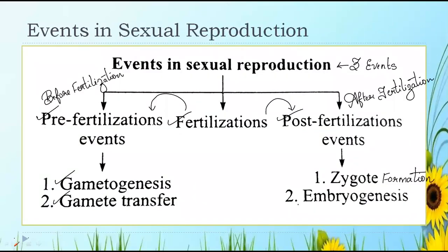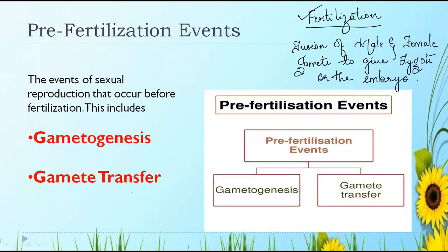Before the fusion, the events which take place are gametogenesis and gamet transfer. After the fusion, the events which take place are zygote formation and embryogenesis. First, we will be discussing about the pre-fertilization events. In pre-fertilization events there are two types: gametogenesis and gamet transfer. Please note down.